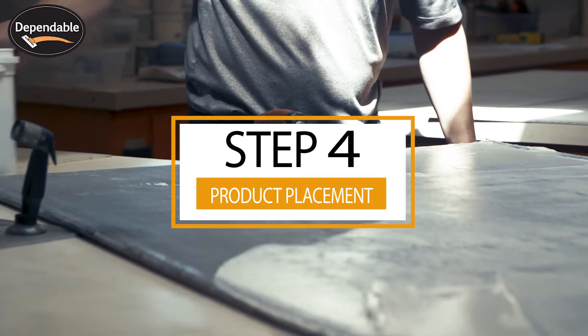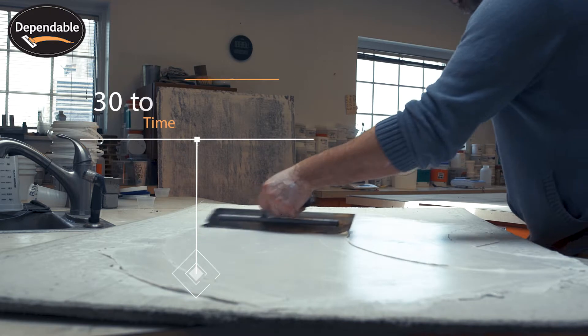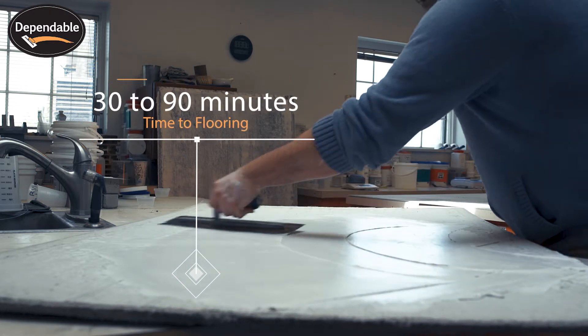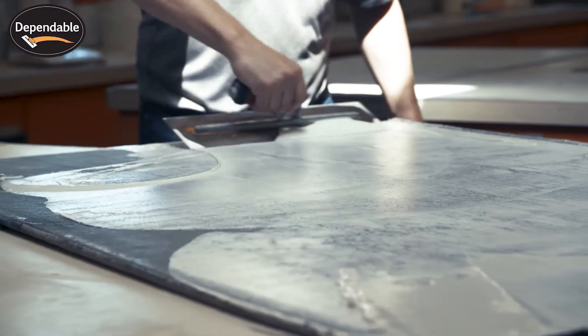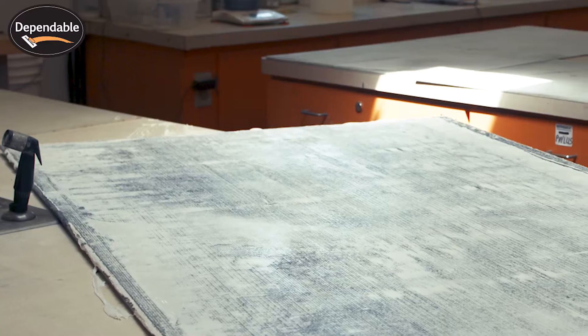Step 4: Pouring. Once Polyskim has been placed, wait between 30 and 90 minutes to install your flooring. Reference the Polyskim data sheet for additional information on drying.